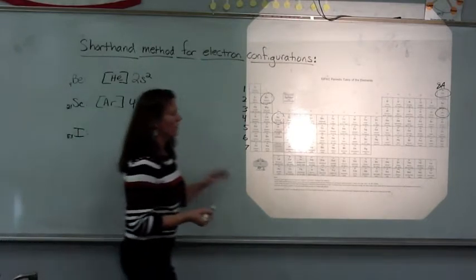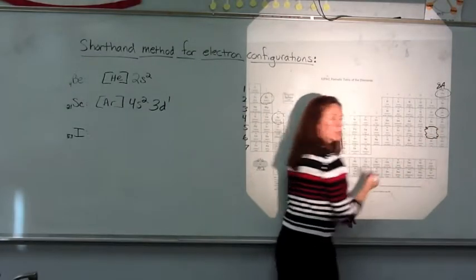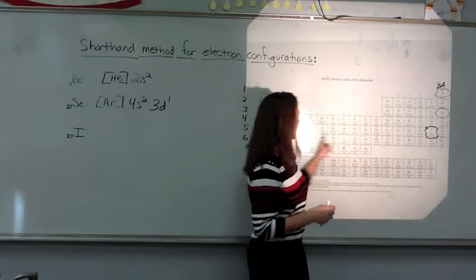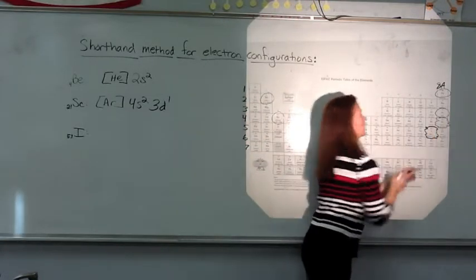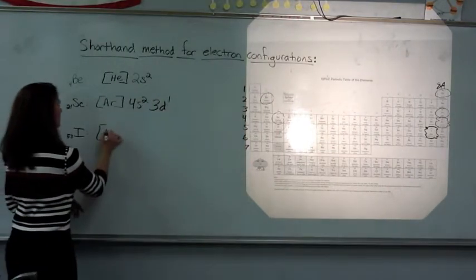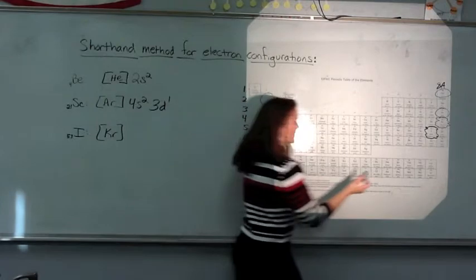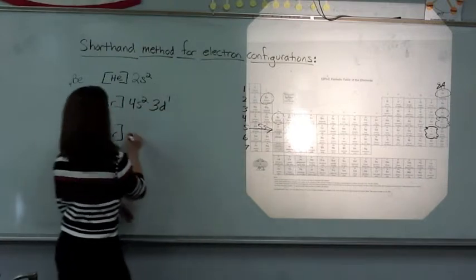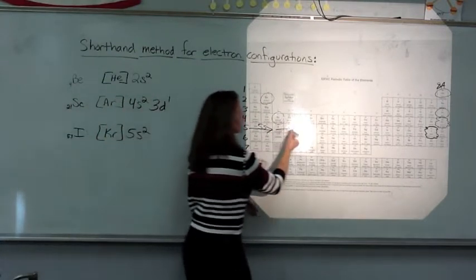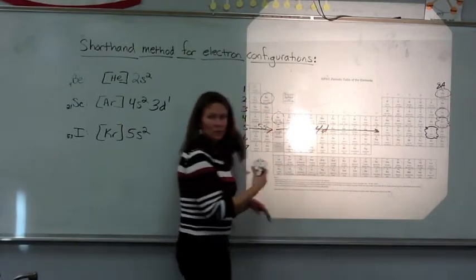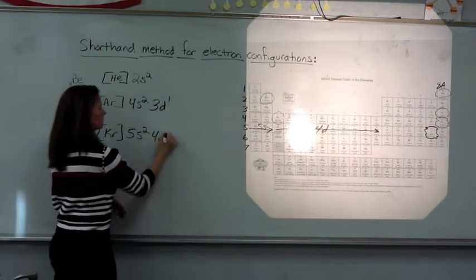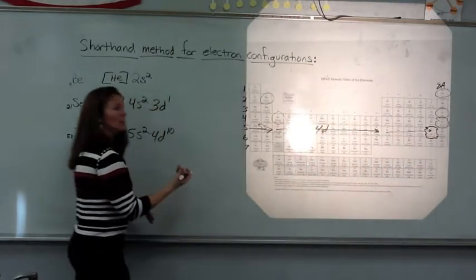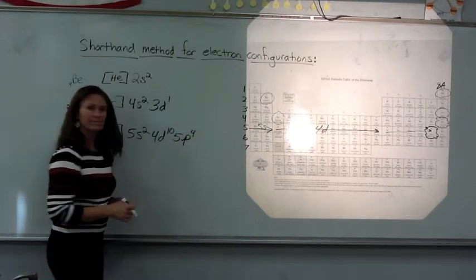Iodine — shorthand method for iodine. Iodine is all the way over here, atomic number 53. I want to look at the noble gas previous to iodine, and that is krypton. So krypton is going to go in brackets. After krypton, we have 5s fill — this is the 5s area — 5s fills with 2. Then we fill the 4d with 10 electrons, and then we fill the 5p. We stop at iodine, so that would be 5p5.